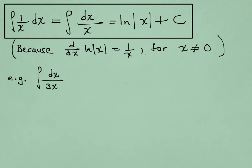So here's an example. If I have the integral of 1 over 3x, that 3 in the denominator is really just a factor of 1 third, so I can bring that out. And integrating 1 over x is the natural log of the absolute value of x.